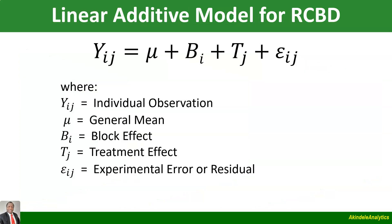Now, the linear additive model for the design is as indicated. You have individual observation equals to the general mean plus block effect plus treatment effect plus experimental error. If you compare this with what we had under Completely Randomized Design, you will realize we have introduced block effect, B-i, as the new addition to cater for block effect. Every other thing remains the same with Completely Randomized Design.